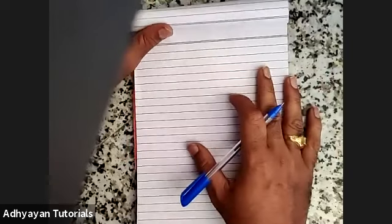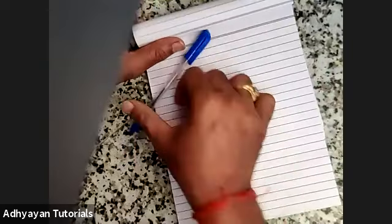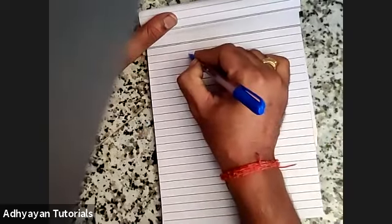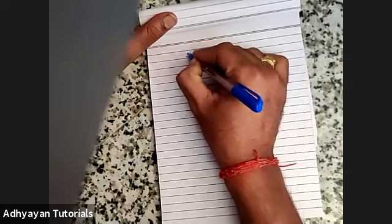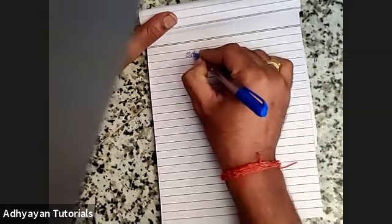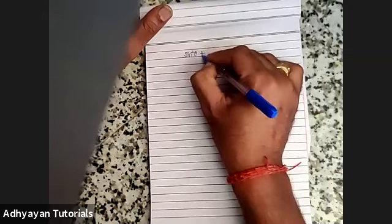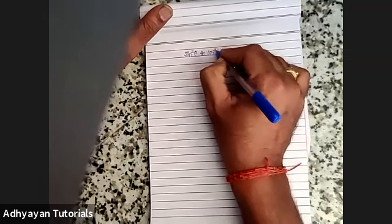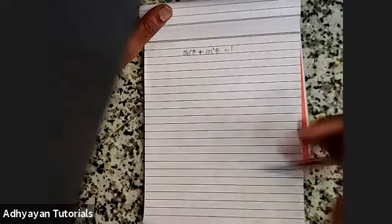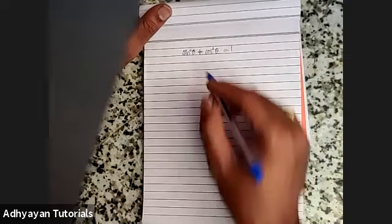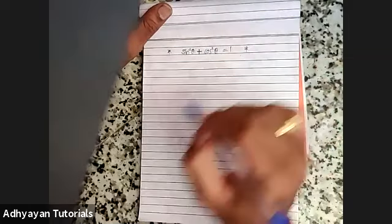Before we start with Practice Set 8.2, there is a formula I would like to discuss. It is nothing but the identity: sin²θ + cos²θ = 1. This is an identity which you have to remember, and we will be using it in our 9th standard.